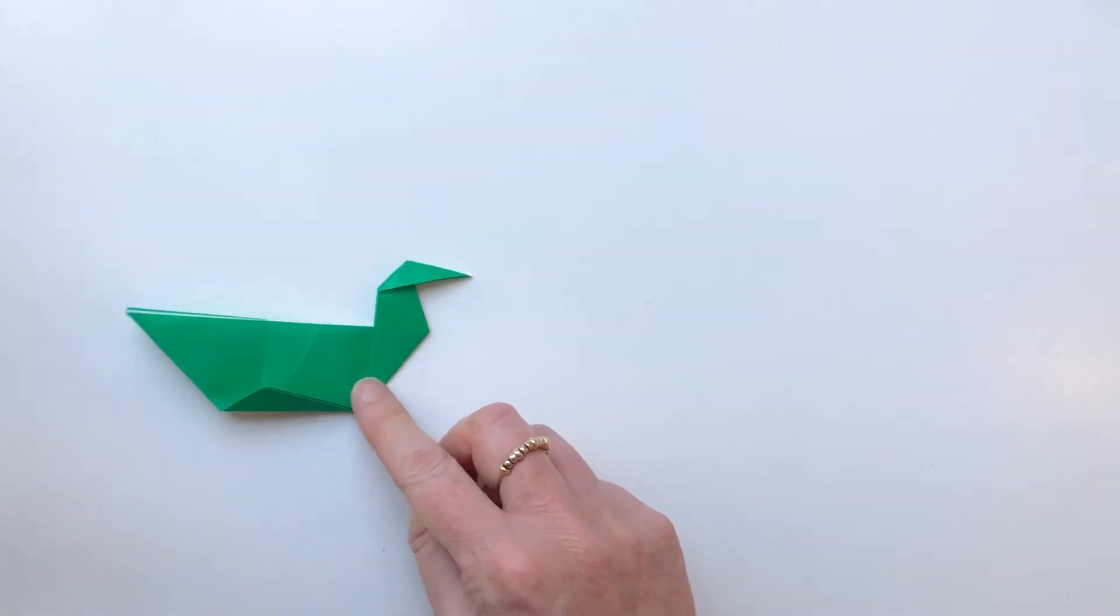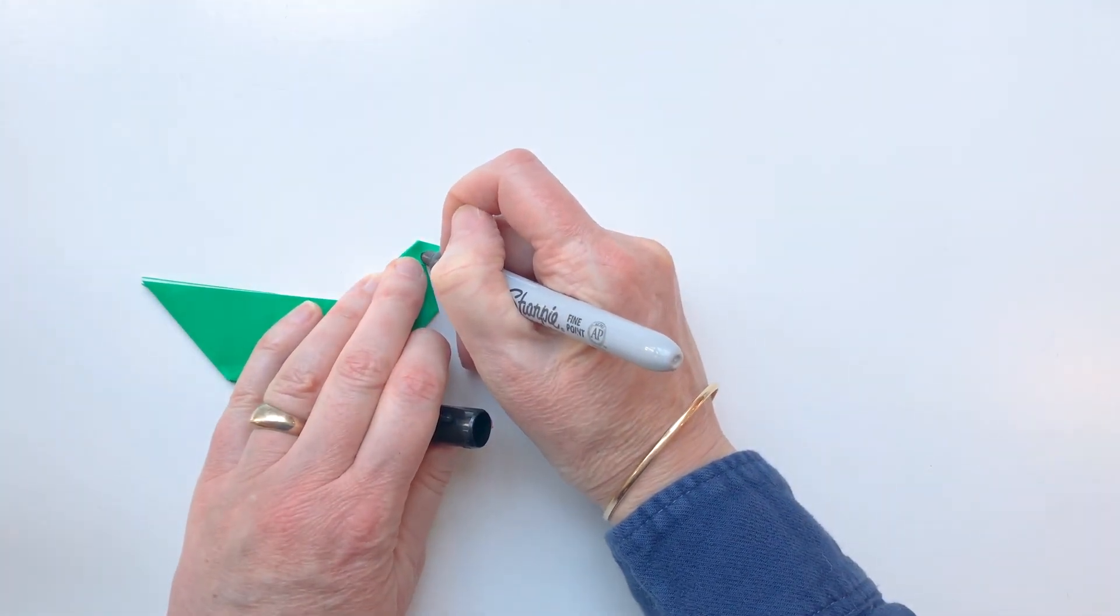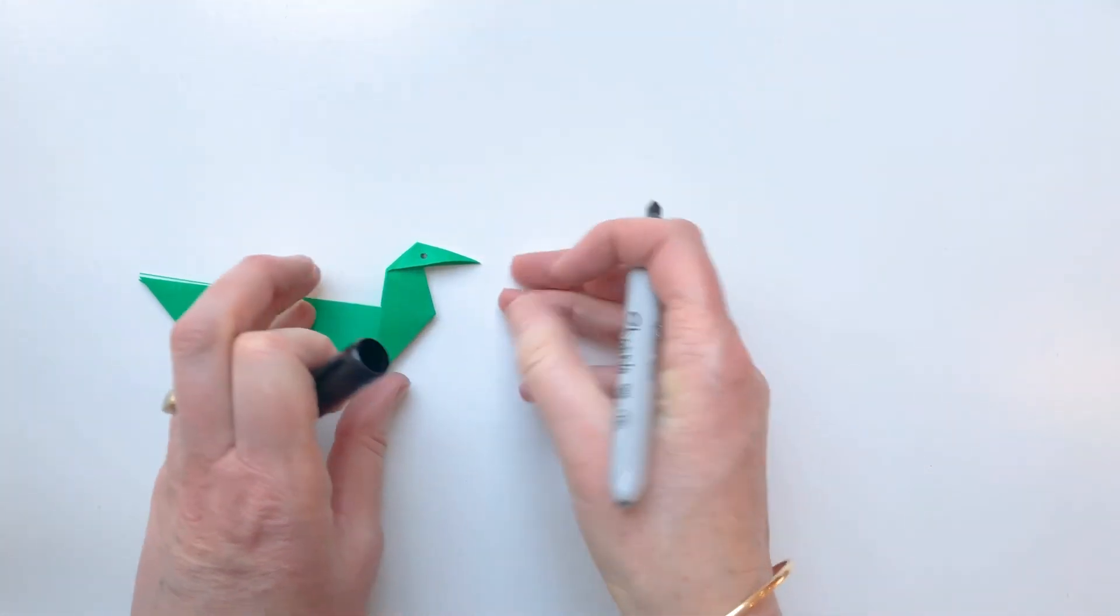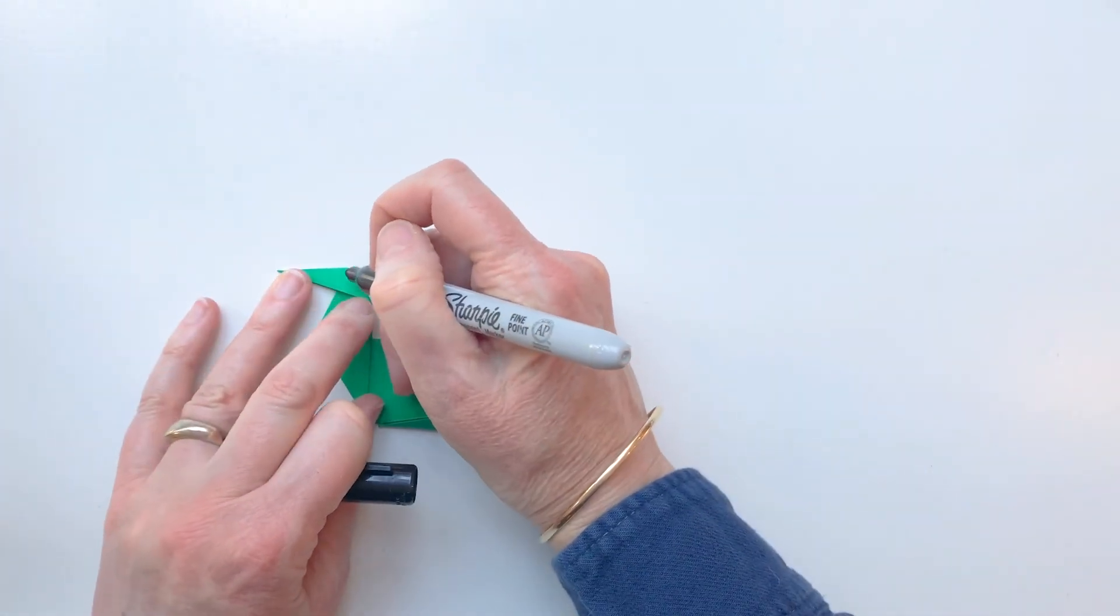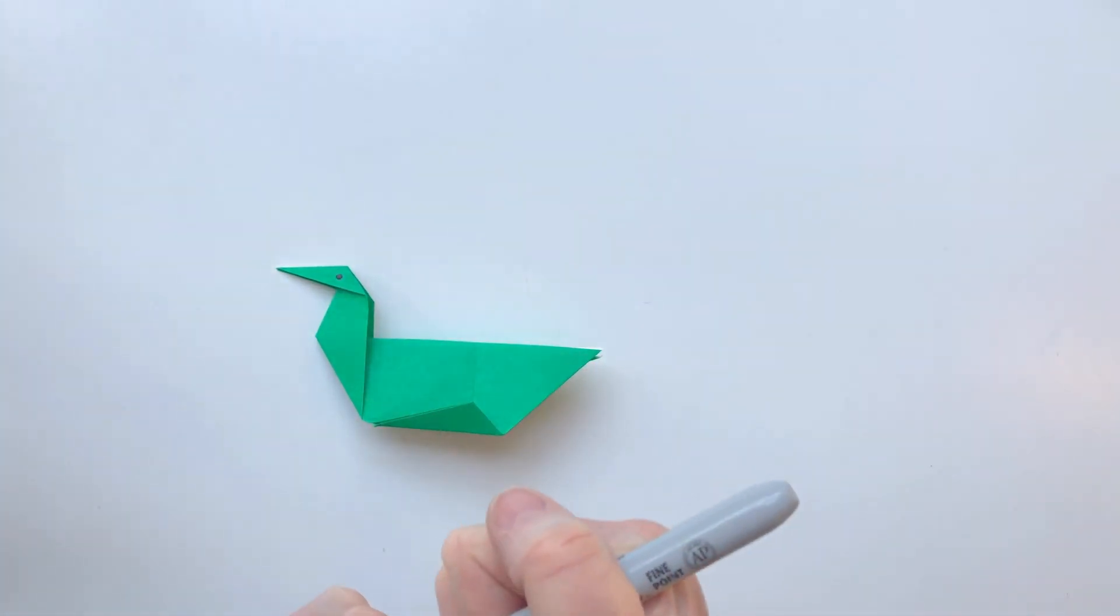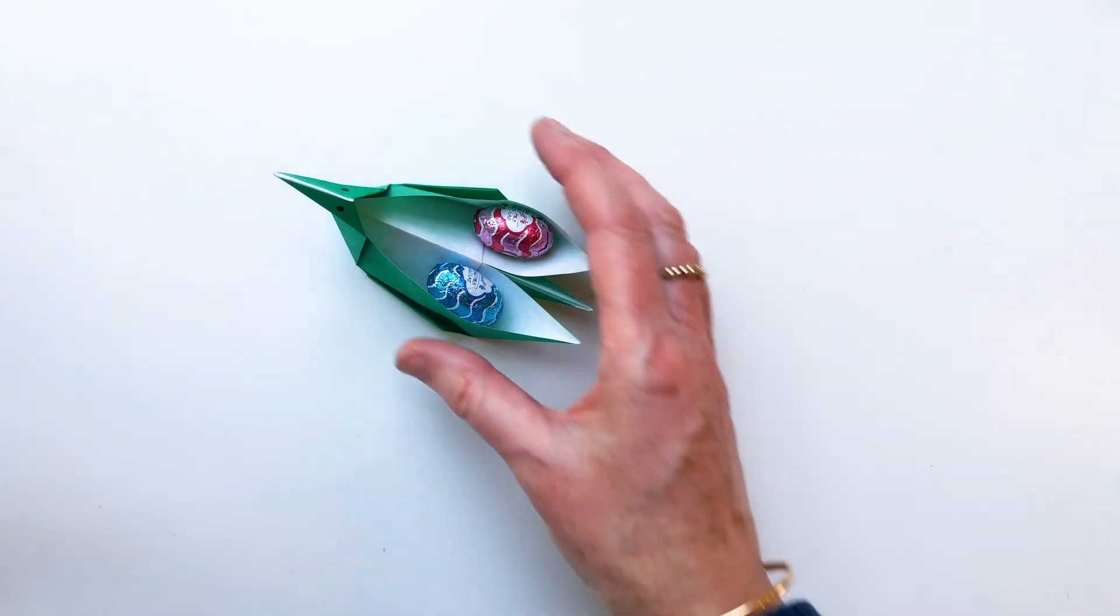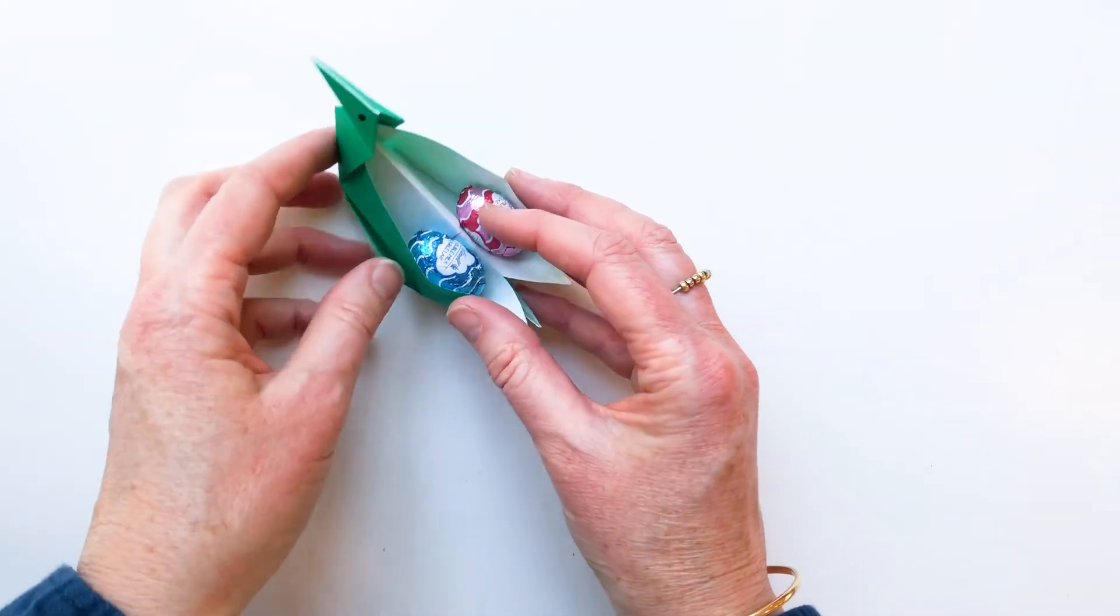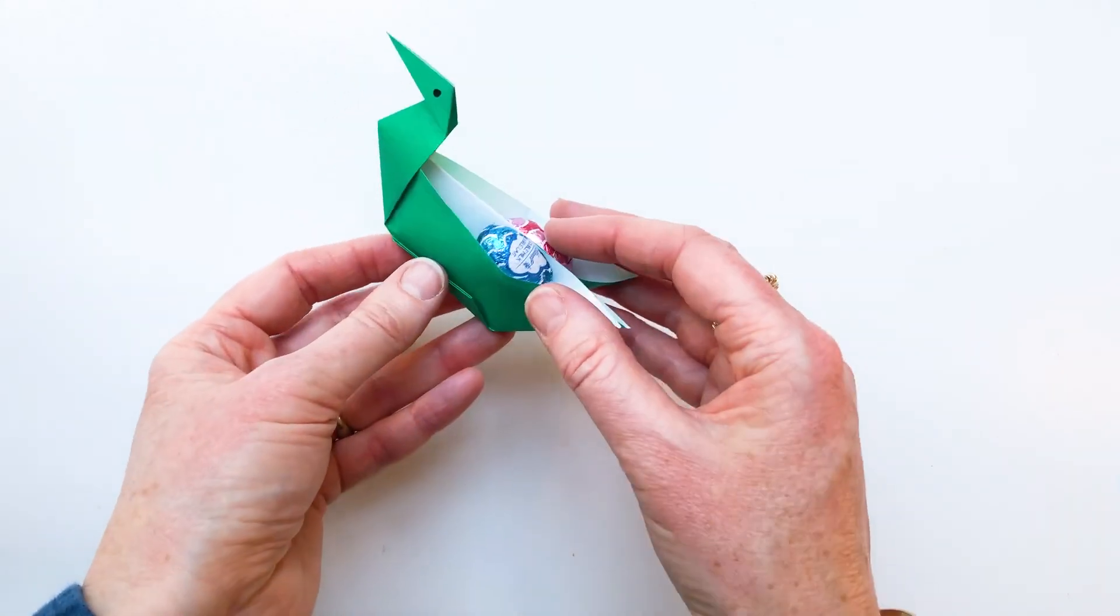So now, if you want to, you can give your bird an eye. And anything else, you might want to draw a wing on it or something. So there is our duck with two eggs. Perfect delivery.